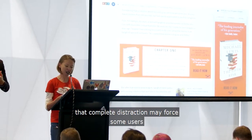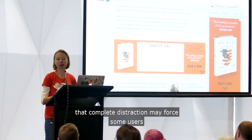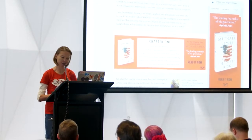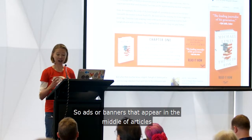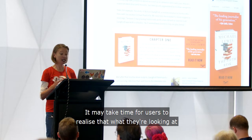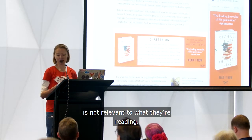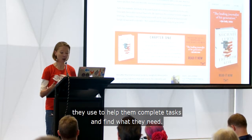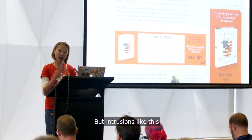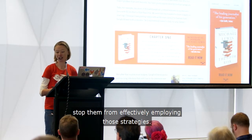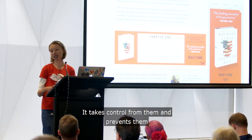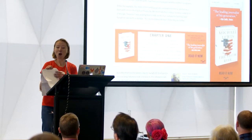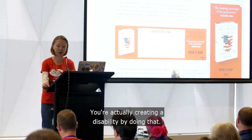But also trying to refocus again. That complete distraction may force some users to start from the beginning again because they've actually forgotten key information while they were trying to turn off the distraction. Ads or banners that appear in the middle of articles can be really confusing — it may take time for users to realise that what they're looking at is not relevant to what they're reading. Most people with cognitive impairments develop strategies that they use to help them complete tasks and find what they need. But intrusions like this stop them from effectively employing those strategies. It takes control from them and prevents them from doing what they need to. That's what I'm referring to when I'm talking about barriers to access — when you have these things, you're raising a barrier. You're actually creating a disability by doing that.